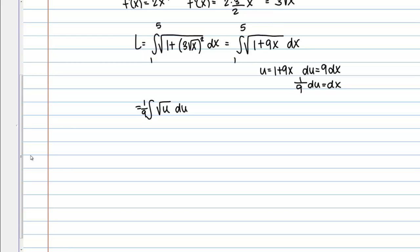Let's go ahead and convert our bounds. Right now, 1 and 5 are x values, but we could convert those to u values using our u substitution. So if I take x equals 1, and I'm simply going to plug it in to u here, u then would equal 1 plus 9 times 1, which is 10, so that's my new lower bound, 10. And then I can convert x equals 5 in the same way, u equals 1 plus 9 times 5, so that's 1 plus 45, or 46, and that's my new upper bound.